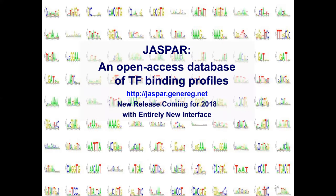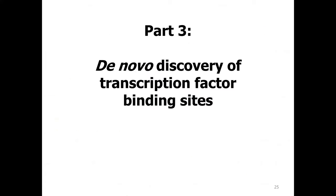Where do transcription factor motifs come from? There are a variety of different databases you can use. The one most often used these days is called JASPER — it is open and free. You can download individual motifs that have been curated from the literature. If you use any of the standard motif analysis software, especially things that use a web server, JASPER will usually be an option.